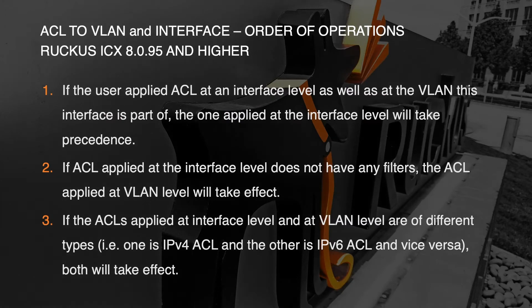Number one: if the ACL is applied at the interface level as well as the VLAN level that the interface is part of, then the one applied to the interface will take precedence. Number two: if the ACL applied at the interface level does not have any filters, then the ACL applied at the VLAN level will take effect.